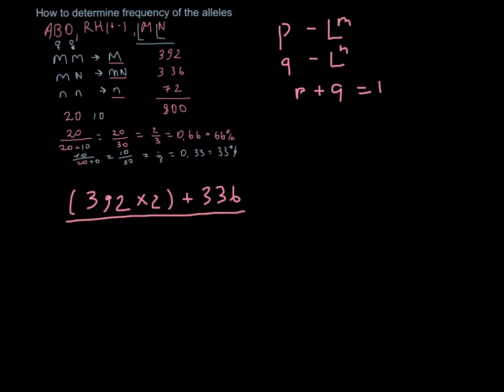And below the line, we use the total number that is 800 and also multiply by two, because all the alleles present are in two copies.